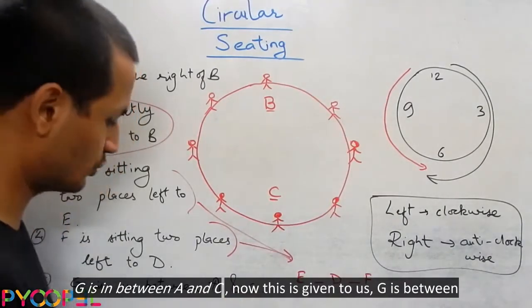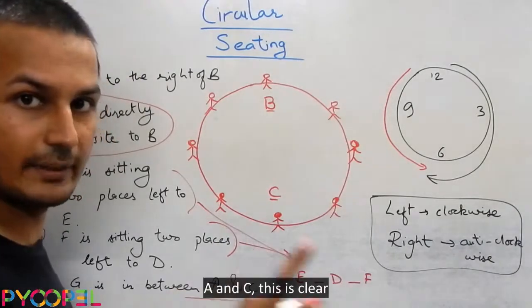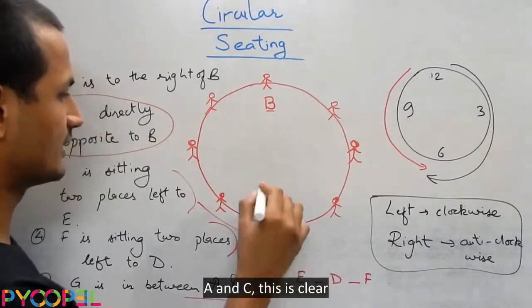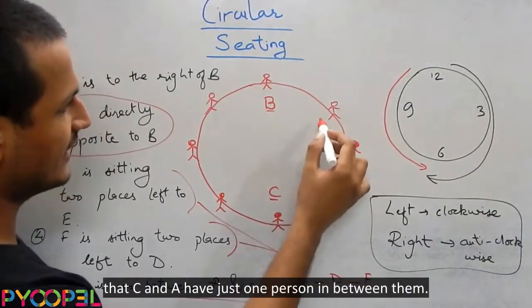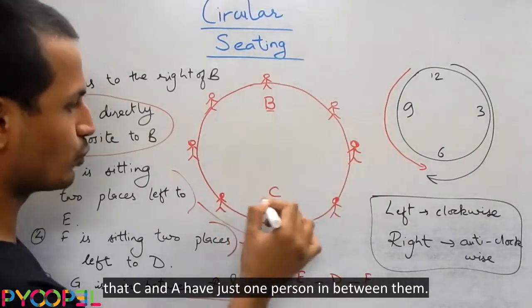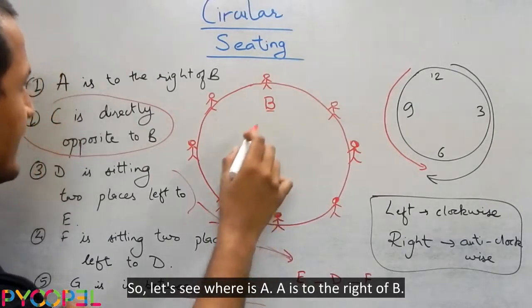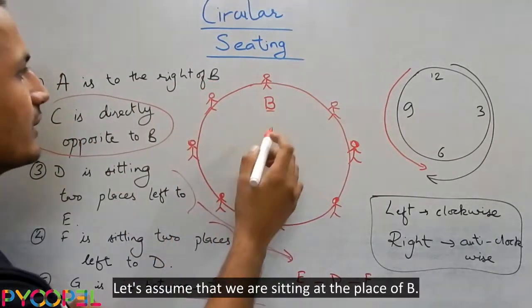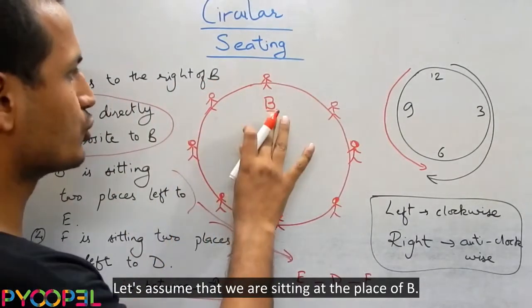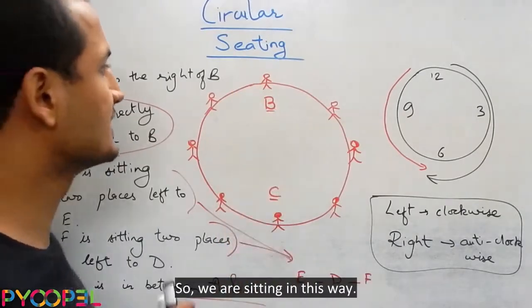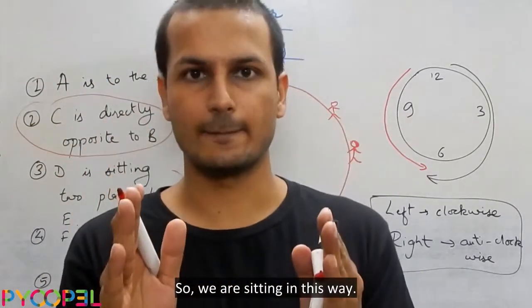G is in between A and C. Now, this is given to us, G is in between A and C. This is clear in that C and A have just one person in between them. So let us see where is A. A is to the right of B. So now let us assume that we are sitting at the place of B. So we are sitting in this way.